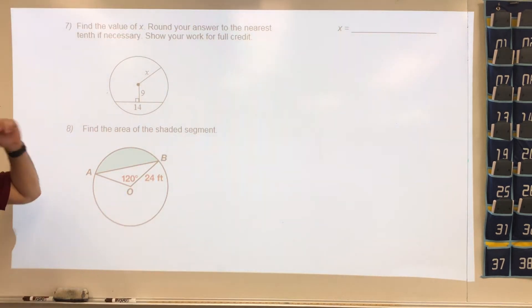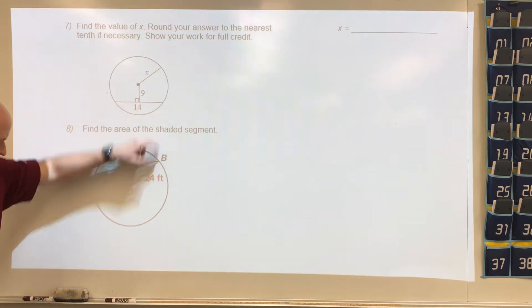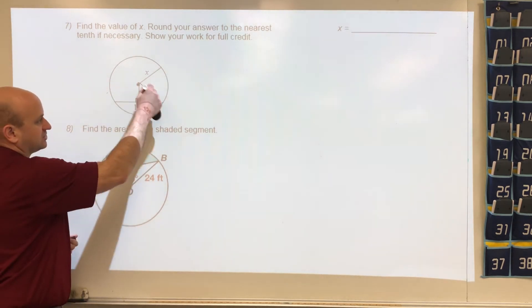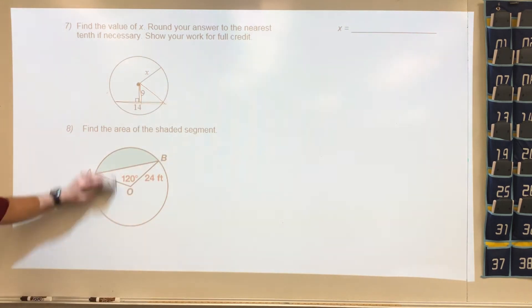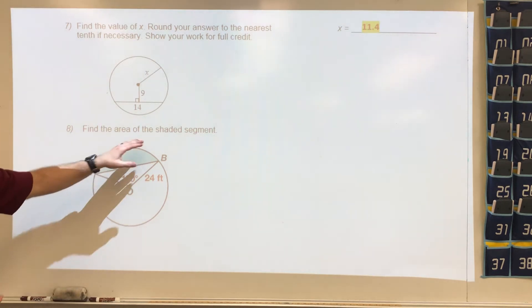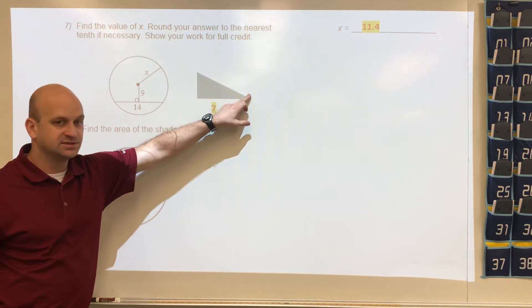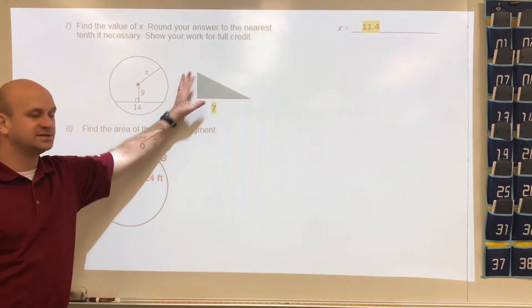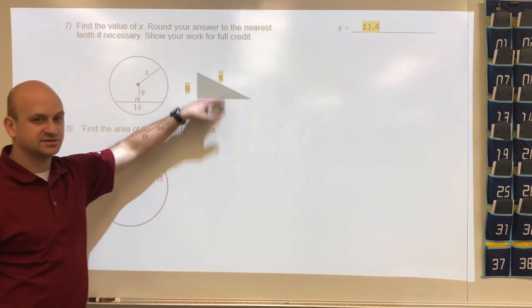On this one here, they want you to find the value of x, which is a radius, but in order to do that we need to create a right triangle. This is 9, this whole chord is 14, and we know that a chord perpendicular to a radius or diameter is going to bisect it. What we end up having is a triangle where this is the radius, this is going to be 7, this is going to be 9.